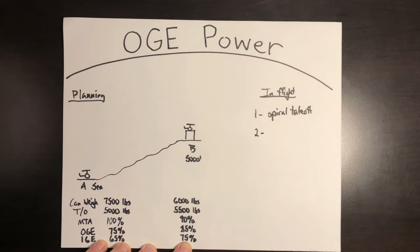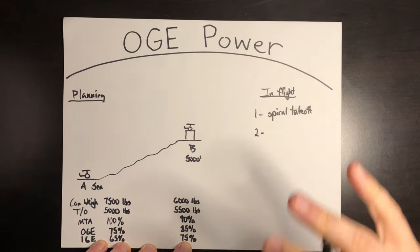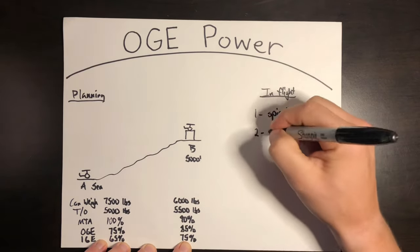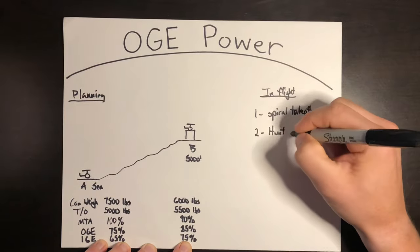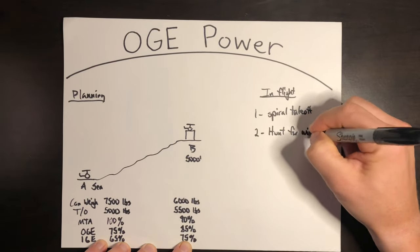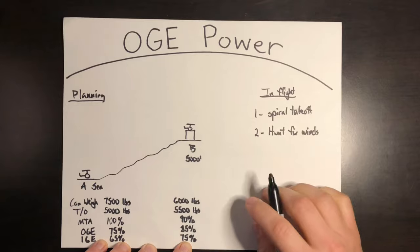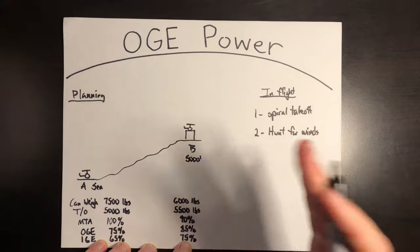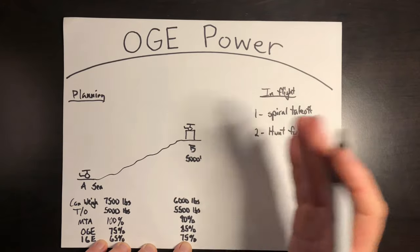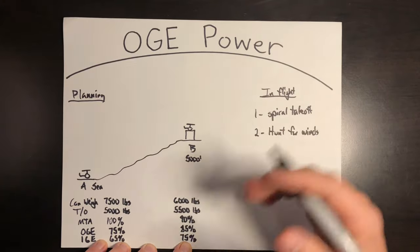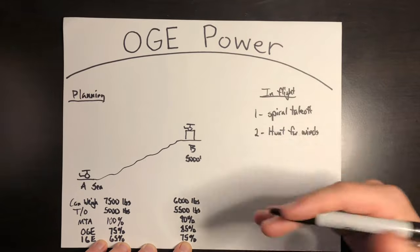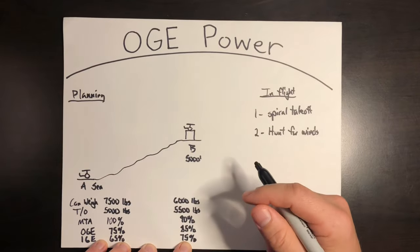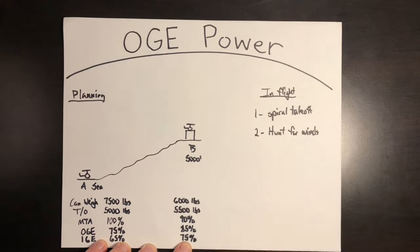Second, say you're trying to do an OGE power takeoff and you need to get a little bit up and out faster. Well, this technique is hunt for the winds. By that, I mean you pull in your OGE power and just kind of relax on the tail rotor pedals and let the aircraft just kind of weather vane into the wind and find where the true headwind is. Once you find it, translational lift will slowly start to take effect and let the aircraft climb and just get a little bit more of a climb rate out of that confined area or that OGE takeoff.